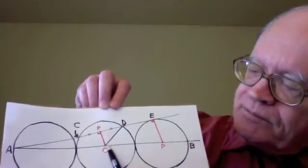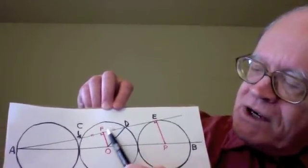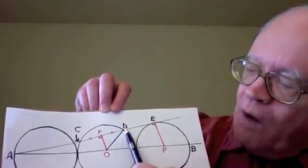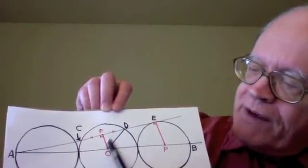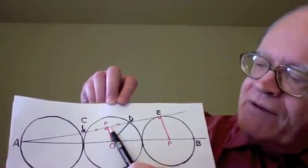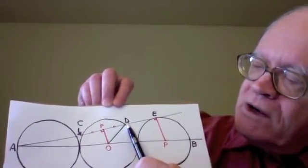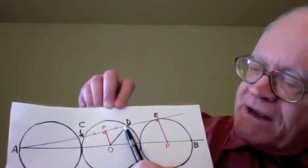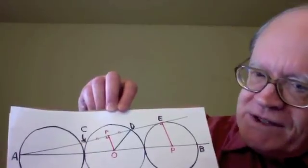3 fifths, 5 fifths. So FD must be 4 fifths. 3 fifths, 4 fifths, 5 fifths. A 3, 4, 5 right triangle. Since length FD is 4 fifths, we simply double that and get the length of CD to be 8 fifths.